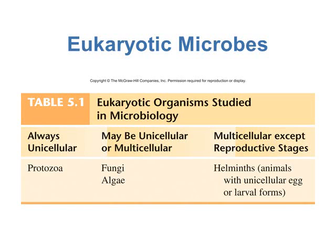Some eukaryotic microbes are always going to be unicellular, meaning they're just one-celled organisms. These include the protozoa. Protozoa are animal-like organisms — they have characteristics similar to animals, but they don't go into the animal kingdom because they're only unicellular. According to the definition of the animal kingdom, animals have to be multicellular organisms.